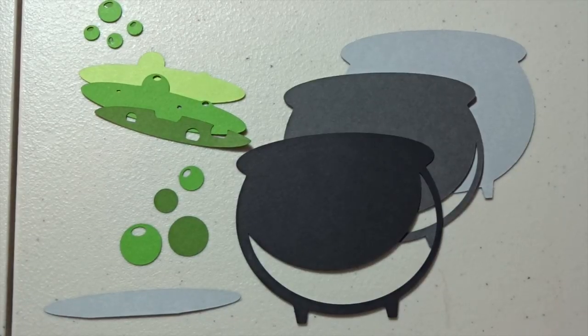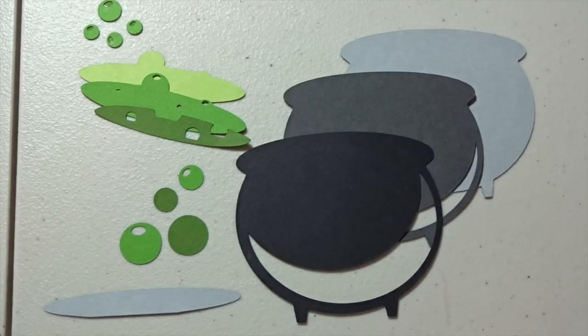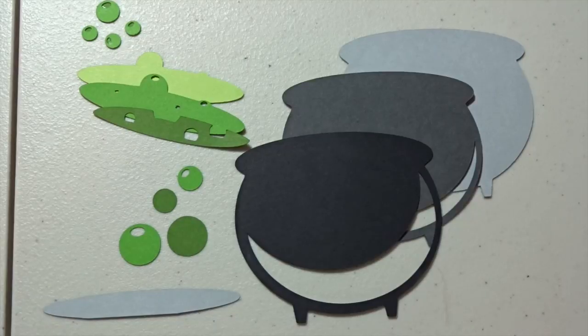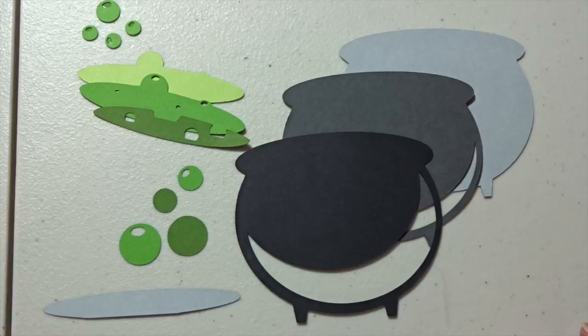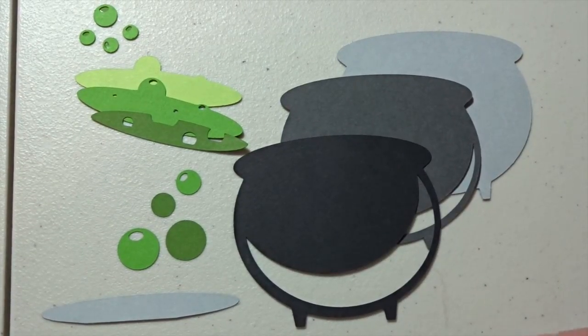I had so much fun in the first one, I thought I would go ahead and put together another one of the Miss Kate Cuttables. This file is called Cauldron and it features an adorable witch's cauldron with some bubbling green liquid inside. So let's go ahead and get started.